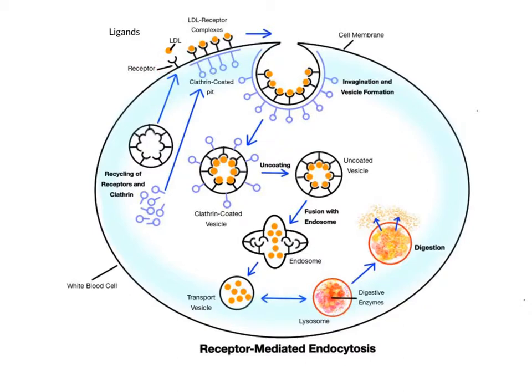Examples of ligands include vitamins, antibodies, some hormones, transferrin used to carry iron in the blood during hemoglobin recycling, and low-density lipoproteins, or LDLs, which are proteins that carry lipids through the blood.